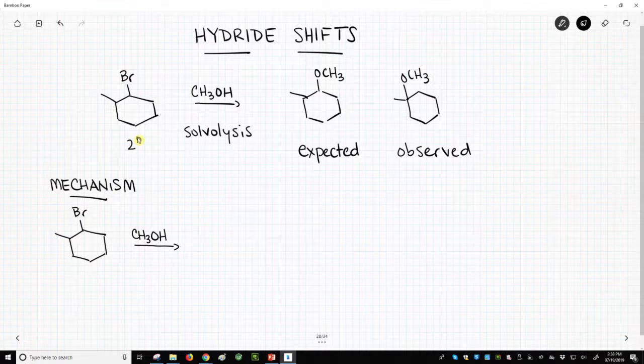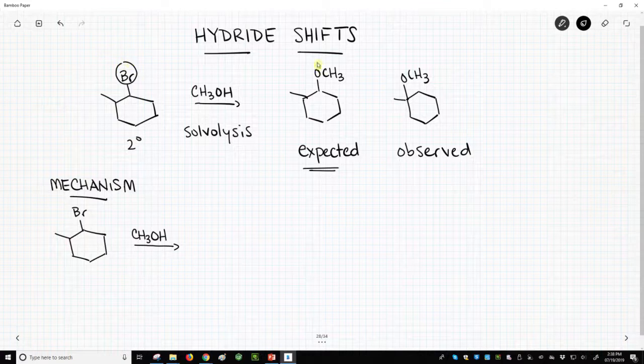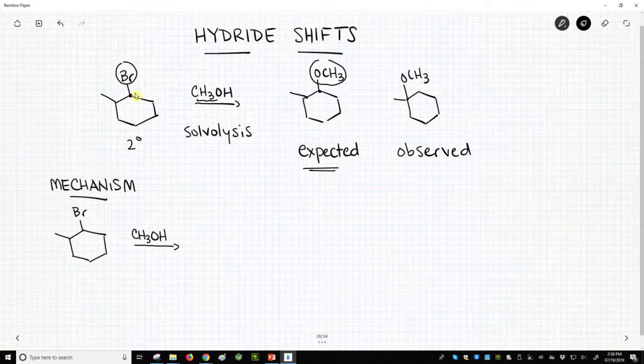What we would expect is to replace the bromide with a methoxy group, which came from our methanol, at this particular carbon, because that's where the bromide started. Well, as it turns out, in this reaction, we get an unexpected product.